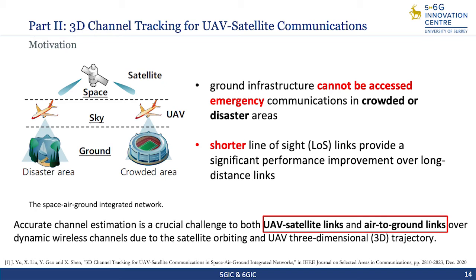So in this part, we will present 3D channel tracking for UAV satellite communications. As mentioned earlier, with UAVs deployed in the middle of ground-space communications, shorter line-of-sight links provide a significant performance improvement over long-distance links. However, in practice, it is non-trivial to obtain real-time channel information due to the orbiting of the satellite and 3D UAV random trajectories, which impose a formidable challenge on modeling and tracking the dynamic channel. In order to have better channel tracking performance, it is necessary to jointly consider both spatial correlation and temporal correlation of the dynamic channel.